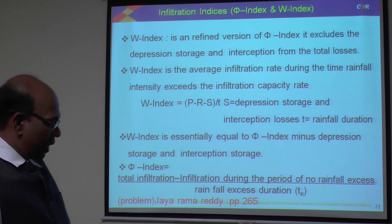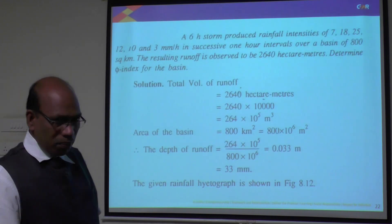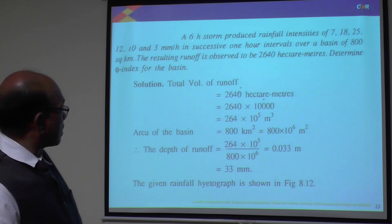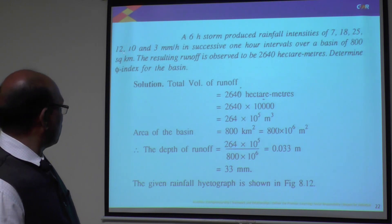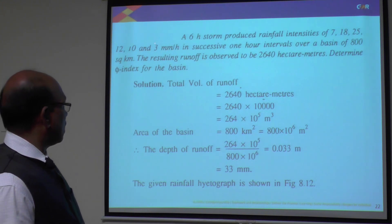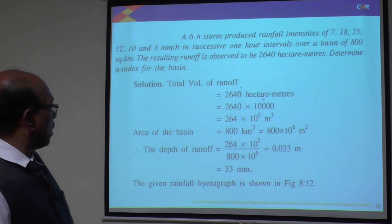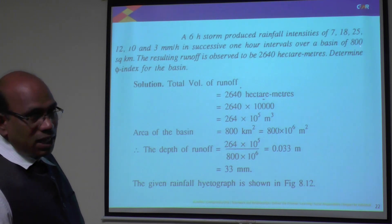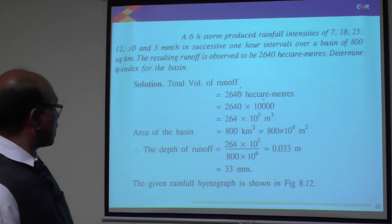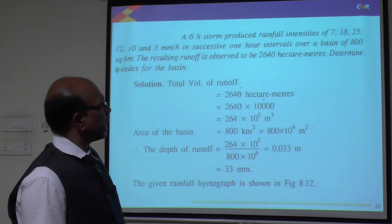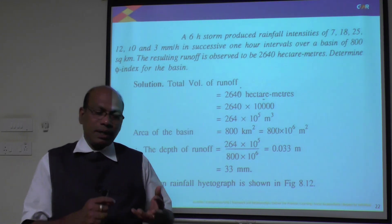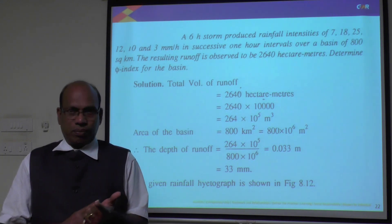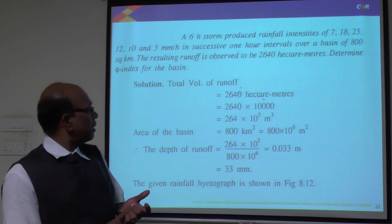Here is a problem: A 6-hour storm produced rainfall intensities of 7, 80, 25, 12, 10, and 3 mm per hour at 1-hour intervals. The catchment area is 800 square kilometers. The resulting runoff is 2,640 hectare-meters. Determine the phi (π) index for the basin. Three values are given — intensity of rainfall, catchment area, and runoff — and we need to estimate the phi index.